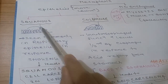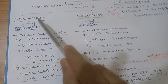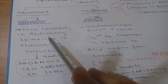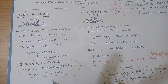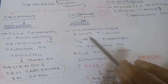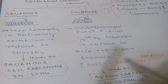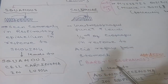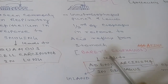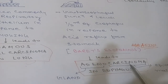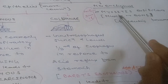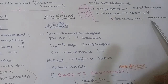Metaplasia is of two types: epithelial (more common) or mesenchymal. Squamous epithelial metaplasia is seen in respiratory epithelium in response to smoking, leading to squamous cell carcinoma in the lung. Columnar epithelial metaplasia is seen at the gastroesophageal junction and lower one-third of the esophagus in response to acidic reflux — known as Barrett's esophagus — and this can lead to adenocarcinoma of the esophagus.